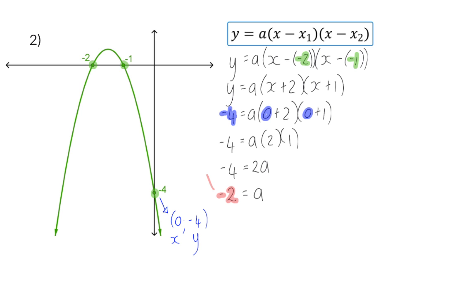Now I can substitute that a value back into the equation, and then simplify. So to simplify, I'm first going to multiply the two brackets to get x squared plus 3x plus 2, and finally I multiply the minus 2 in to end with minus 2x squared minus 6x minus 4.